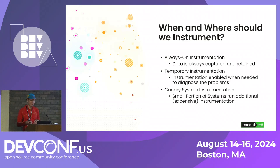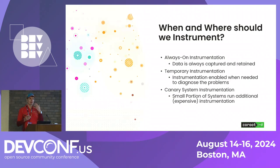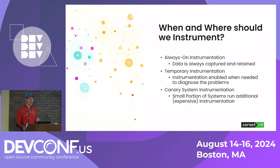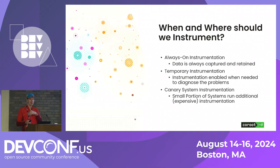Then there is some instrumentation we want to enable temporarily — for example, something complicated is happening and we want more insight in a certain area. That's where eBPF is fantastic, because you can instrument certain things and then remove the probes and remove the instrumentation overhead. And then there is a third type — instrumentation of a canary or dedicated system. In large environments, you can dedicate a host with a lot of instrumentation, used either for deploying new code or just always out there to get more information about the state of the system.